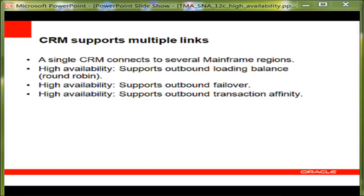Here are some CRM multiple link support details. A single CRM connects to several mainframe regions. The regions are not only CICS regions; they can also be IMS regions or batch programs as well. High availability point one supports outbound load balance. Outbound transaction means transactions from Oracle Tuxedo to CICS. High availability point two supports outbound failover. When one of the CICS regions is down, all requests from Oracle Tuxedo can be handled by other CICS regions. High availability point three supports outbound transaction affinity — if more than one request is in the same Oracle Tuxedo transaction scope, it is handled by the same CICS.